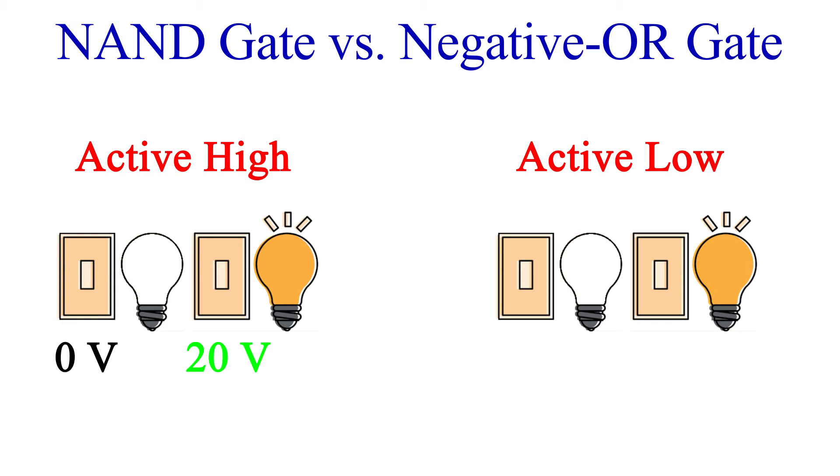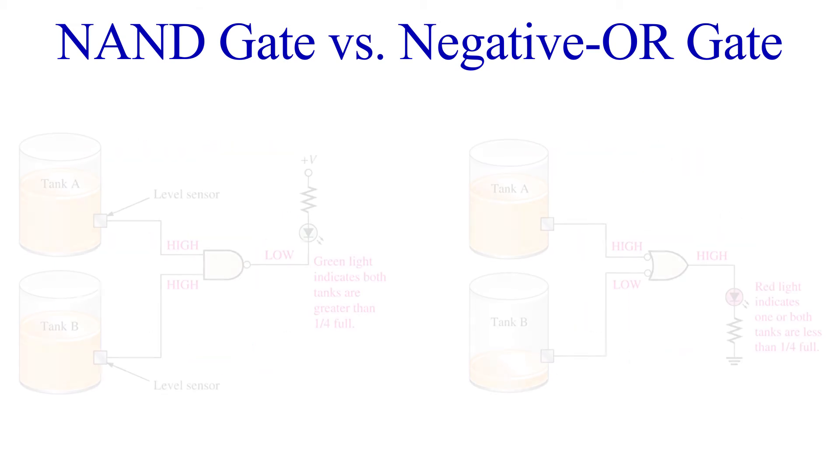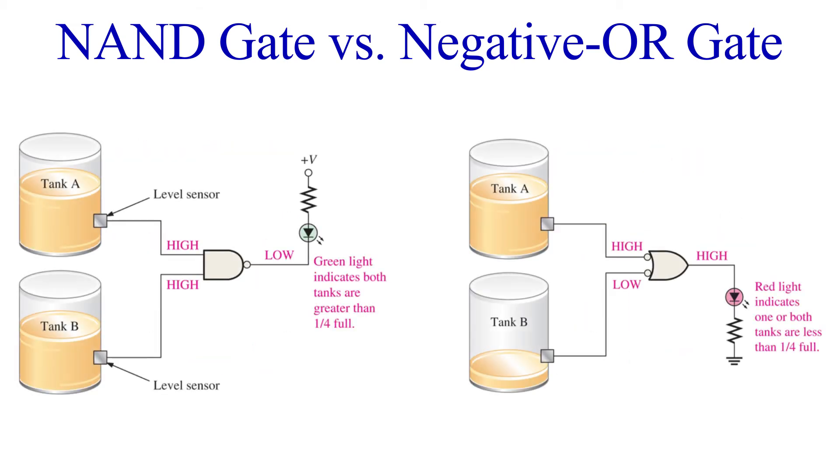A light turns on when there is no signal present. Here's the difference in the use of these gates from the textbook. There are two tanks that are storing a liquid chemical that's needed for a manufacturing process. Each tank has a sensor that detects when the liquid is at 25% full.